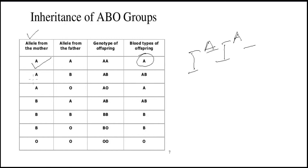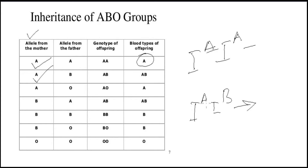In the second case, the mother has provided dominant A and the father has provided dominant B. So the offspring has blood group AB, because in this case there is co-dominance and both genes will express their characteristics.